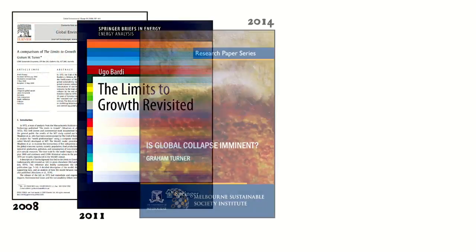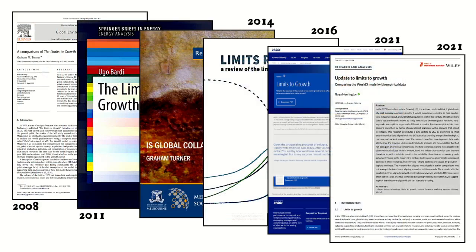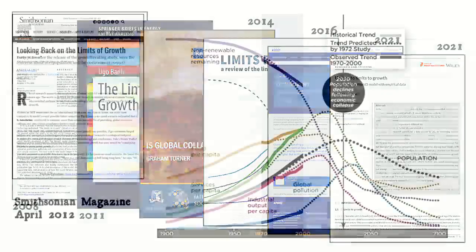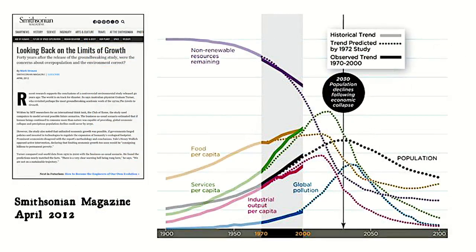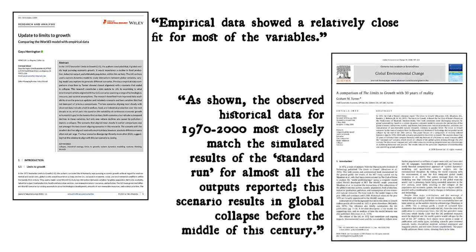The reason why the book is so significant is that, after 50 years, it is the most successful econometric projection ever made. Recent research, using the latest data, has shown the results of the standard run to be incredibly accurate. One recent study commented, 'the empirical data showed a relatively close fit for most of the variables.' Another found that the observed historical data for 1970 to 2000 most closely matched the simulated results of the standard run for almost all the outputs reported.